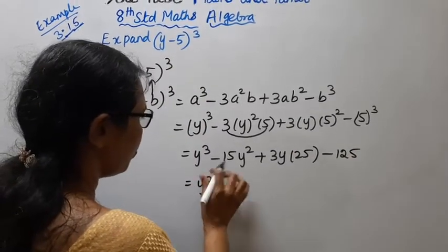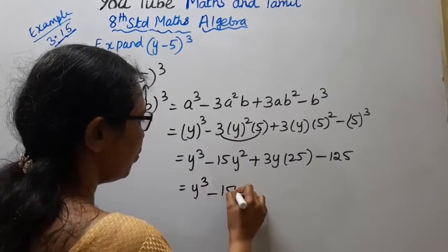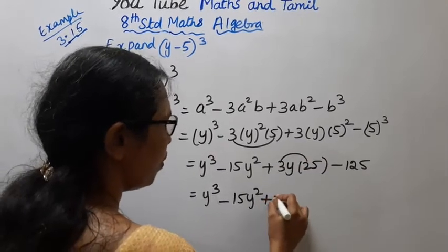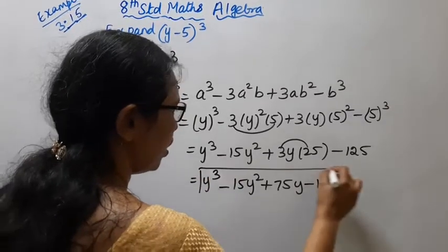Y cube, Y cube minus 15 Y square, 3 into 25 plus 75 Y minus 125.